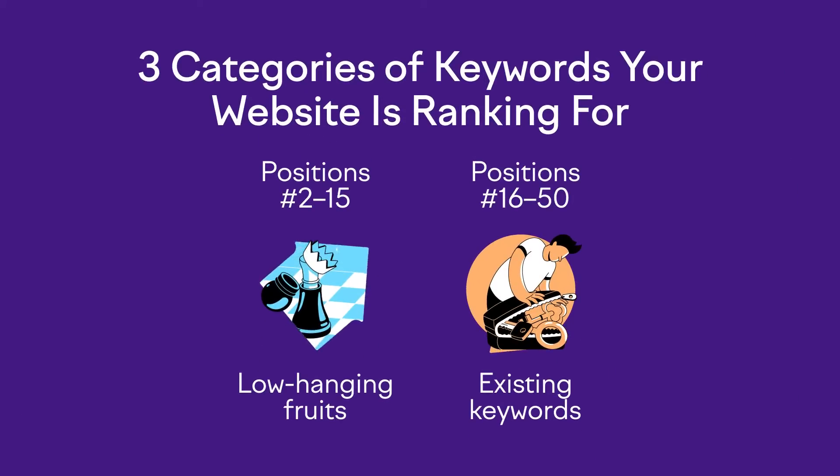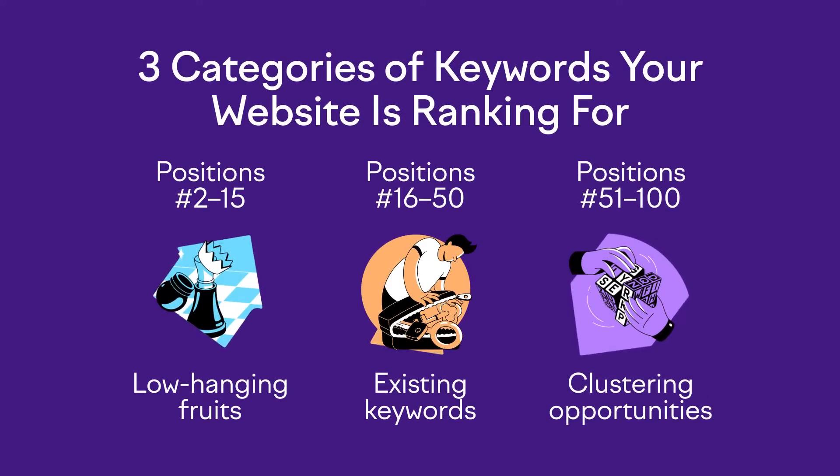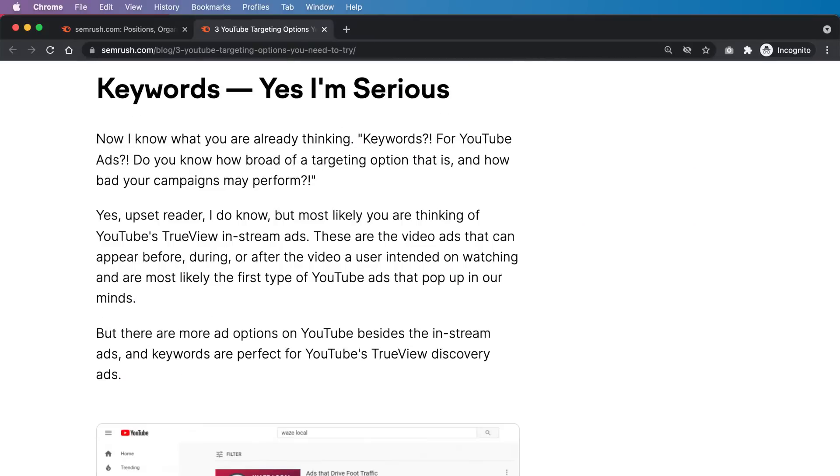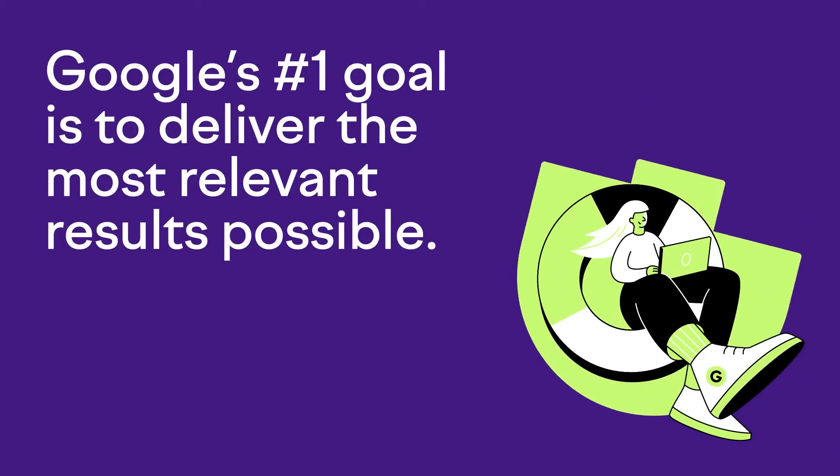The next type of keywords are from positions 16 to 50, which I label as existing. They are also good targets but should be second on the priority list after low-hanging fruit. The final category, positions 51 to 100, I call clustering opportunities. If a page isn't ranking in the top 50, there's a good chance the page isn't targeted enough. For example, look at a keyword that SEMrush is ranking number 52 for: "Which targeting option is best for achieving brand awareness?" The page is about YouTube targeting options — it isn't targeted enough to rank for this long-tail phrase. This is a perfect clustering opportunity: create a dedicated page for this keyword and it will rank much better. Google's number one goal is to deliver the most relevant results, so clustering opportunities are an awesome way to capture more organic traffic and build more topical relevance, improving the performance of all pages in that cluster.